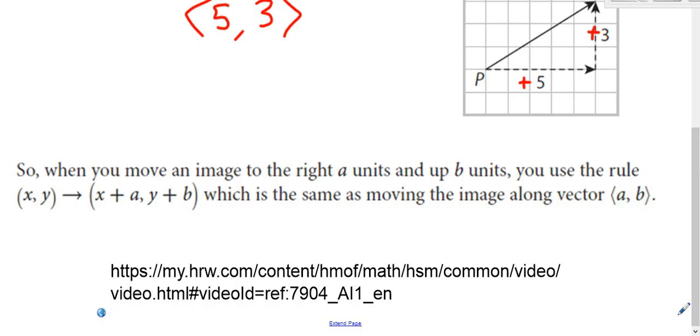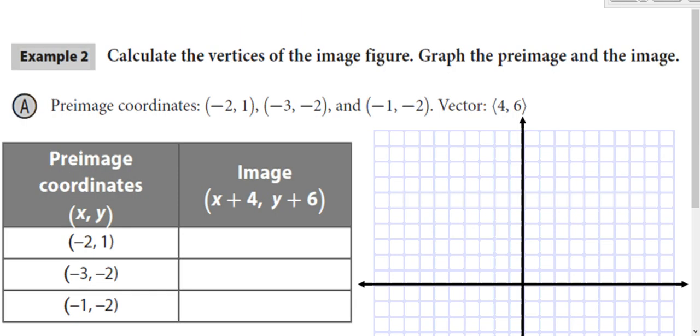Now you can also write rules for how translations shift. Whatever number you're adding by moving to the right or subtracting by moving to the left, you would write with the X component. B is how much you're moving up or down, so you add it to the Y component. We're moving it with the vector 4, 6. Since it's positive 4 and positive 6, that means it's going to the right and up, which means we're adding 4 to the X and we're adding 6 to the Y.